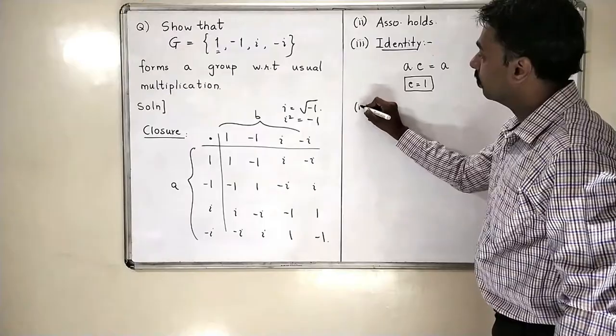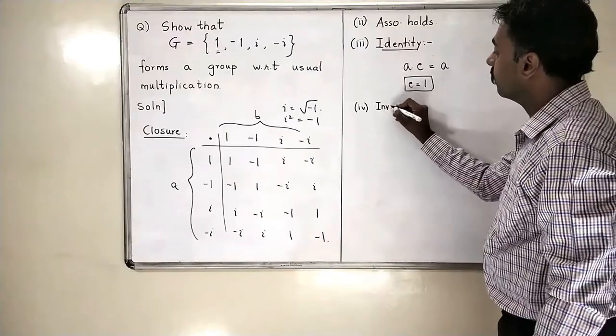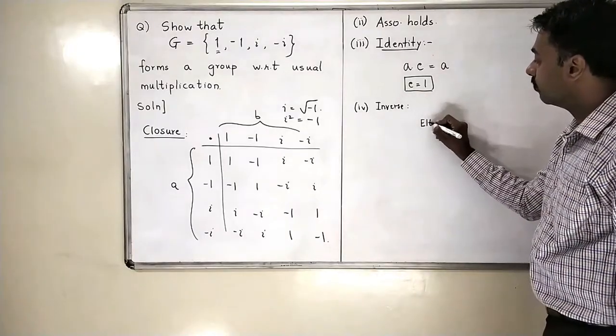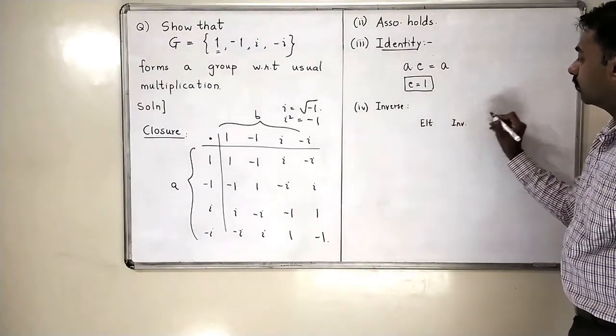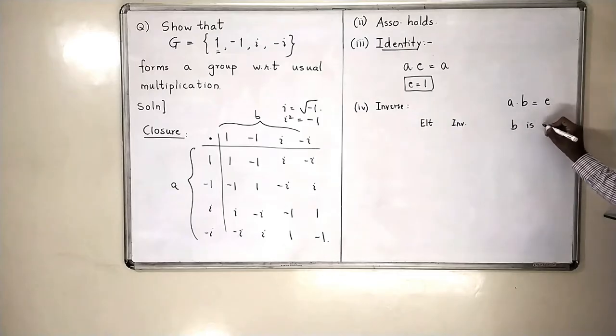And the last part is inverse. I will take all the elements, and I will check whether the inverses are there. If I take element, and if I take the inverse, a into b should be equal to identity. If that is the case, I will say that b is inverse of a.